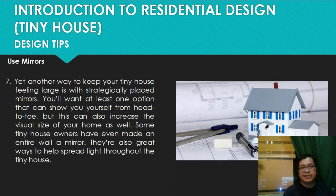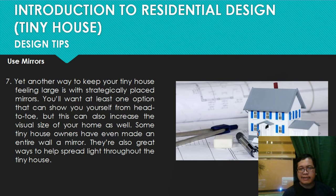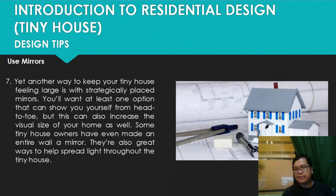Next, use mirrors. Another way to keep your tiny house feeling large is with strategically placed mirrors. You'll want at least one option that can show you yourself from head to toe, but mirrors also increase the visual size of the room. Some tiny house owners have even covered an entire wall with a mirror. Mirrors are also a great way to help spread light throughout the tiny house. When you place a mirror, it gives the mind a perception that the space is bigger than it actually is.